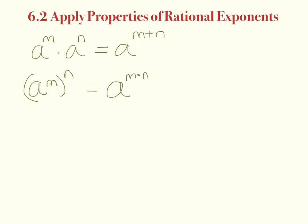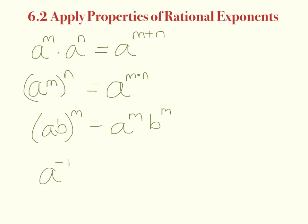We know that if we have a times b in parentheses all raised to the m, then we can apply the exponent to both — a to the m, b to the m. If we have a negative exponent, that does not mean the answer is negative; it means it's the reciprocal of a to the positive m.